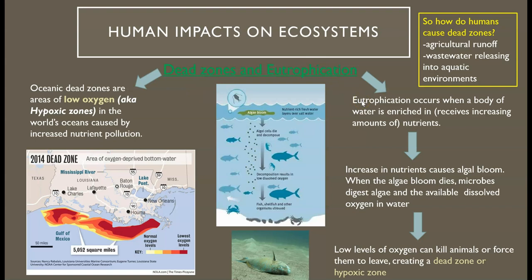Eutrophication is connected to dead zones because it's the process of adding nutrients to water — it occurs when a body of water is enriched or receives a lot more nutrients. The increase in nutrients causes algal blooms because the algae want to eat up all those nutrients. Eventually the algal blooms die and microbes digest the algae, and as they digest them they take oxygen from the water. That massive algae bloom requires a lot of breaking down, and all that breaking down takes oxygen from the water, leading to dead zones or hypoxic zones where there's no available oxygen.